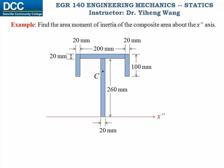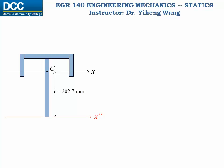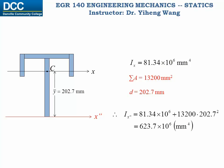Now normally this is unusual, but just for practice: what if we are also asked to find the moment of inertia of this same composite area about the x double prime axis? Since we already know I_x, the moment of inertia about the x-axis, and we also know the total area of this composite area and the perpendicular distance between these two parallel axes, we can simply apply the parallel axis theorem to the entire composite area and get the moment of inertia about the x double prime axis. As you can see, it is a lot larger than I_x. As I mentioned, for all parallel axes, the moment of inertia calculated about the centroidal axis is always the smallest one.